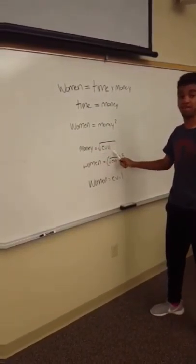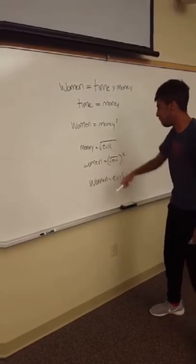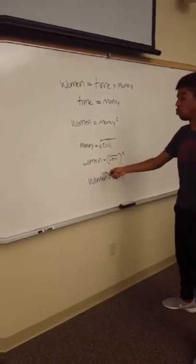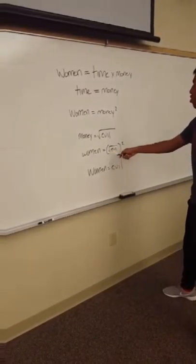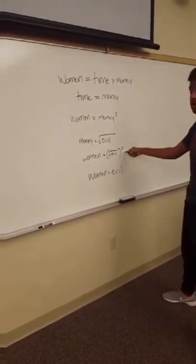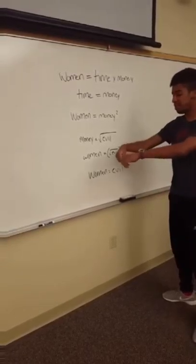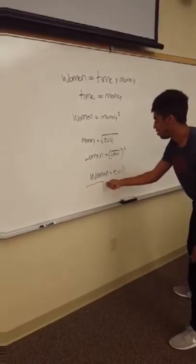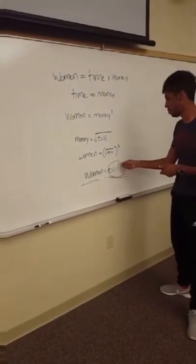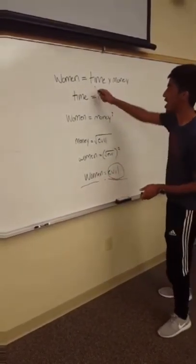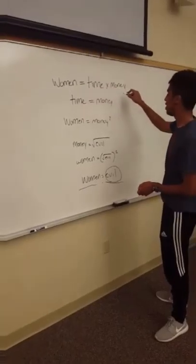Money equals the root of evil as we know therefore we have women equal evil. Evil square root evil squared. Alright then we come to the conclusion of this women equal evil. Alright women equal evil you see how he did that. You see that you see that right there ladies and gentlemen alright right there.